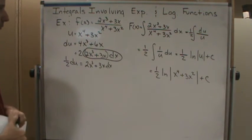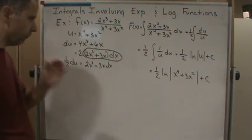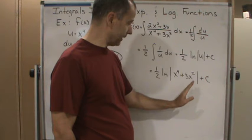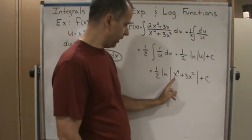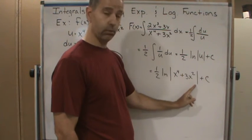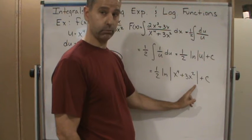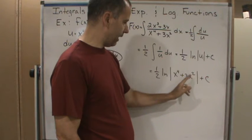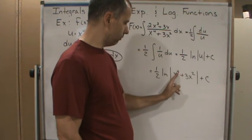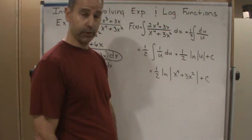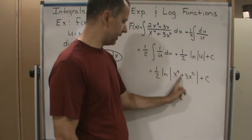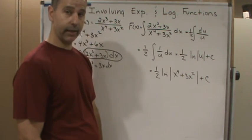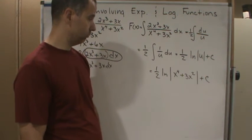Okay, now here I don't need the absolute value signs, so I can drop the absolute value signs because this will never be 0 or negative. Okay, so x has, they both have even exponents, and it's an addition sign, so this will never be negative or 0.